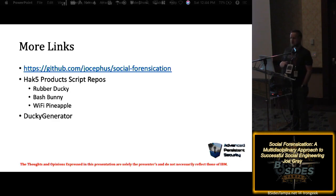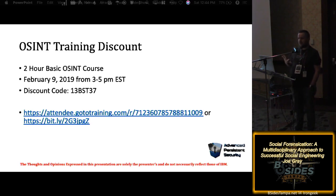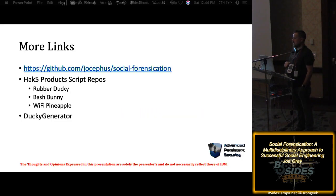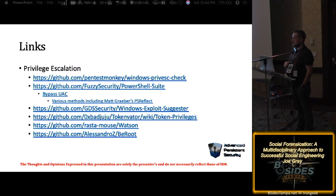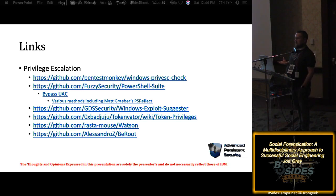Here are some links: for privilege escalation, here are some scripts I found to be good. Here's my GitHub repo associated with this presentation — I've only got two ducky scripts in it right now but there's more to come. Here's the coupon code and link if you want to take my two-hour basic OSINT training next week.